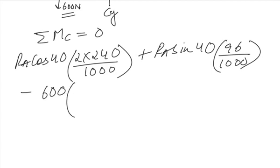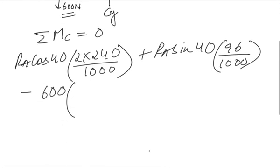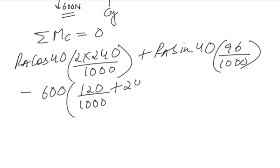Minus the 600 Newton tension acting downwards, anticlockwise. This will be 120 upon 1000 plus 240 upon 1000. Plus the other acting in the clockwise direction. This will be 120 upon 1000.